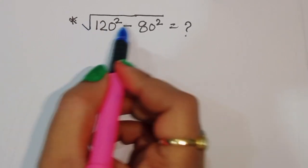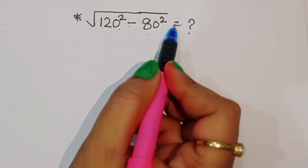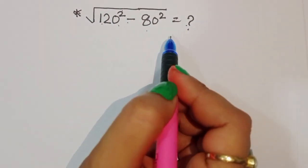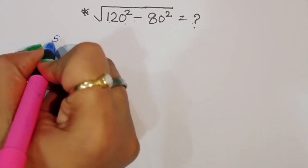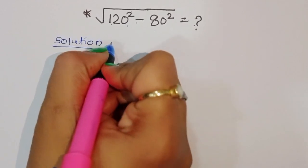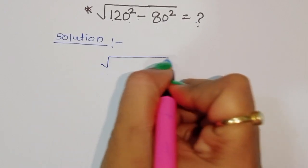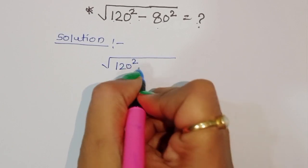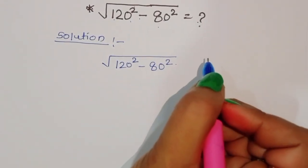The question is given: square root of 120 squared minus 80 squared is equal to what? We have to find out the value of this term. Let's see the solution.